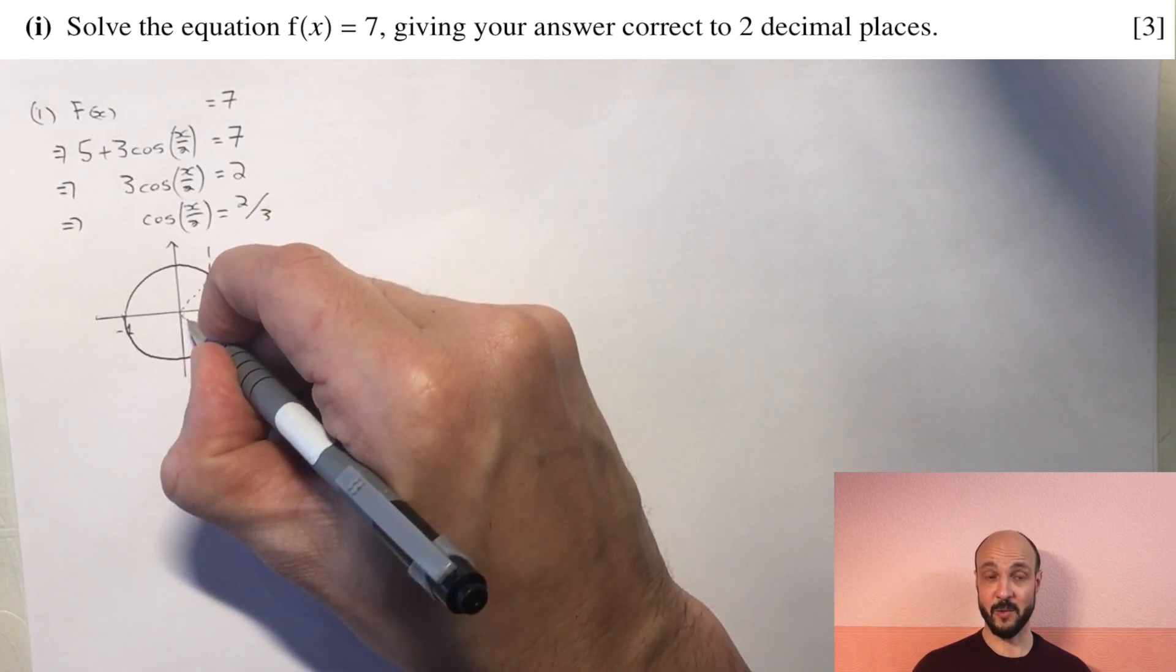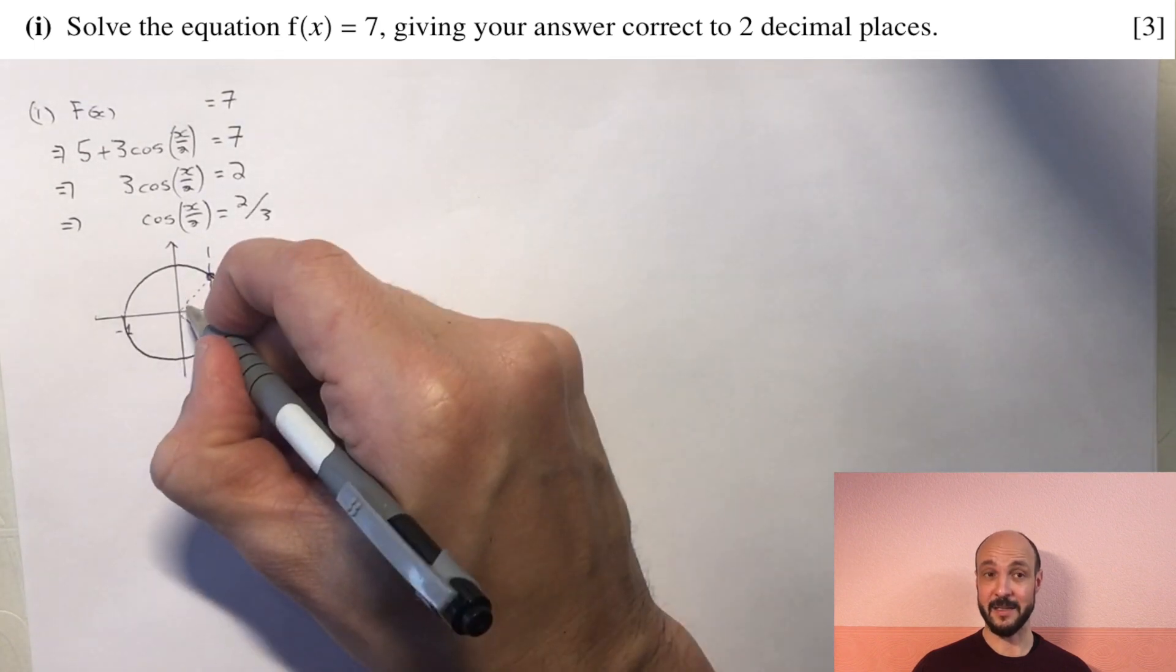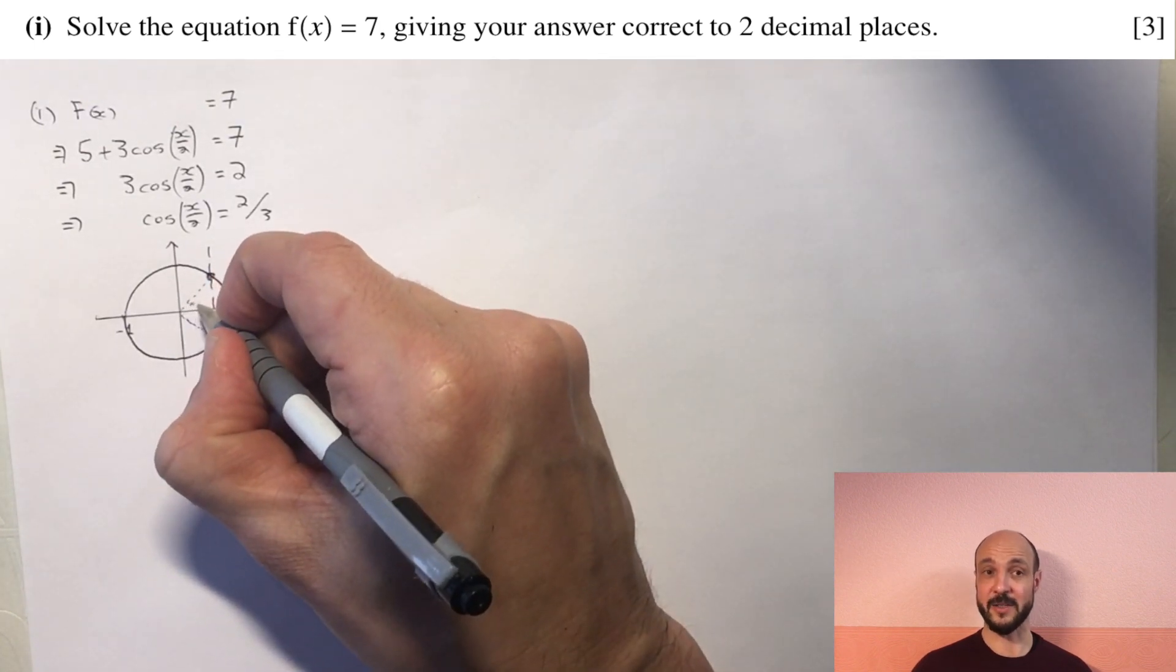Now our domain is 0 through to 2π. So the one we see in the first quadrant, when we find x it's going to be double that so it's going to exist.